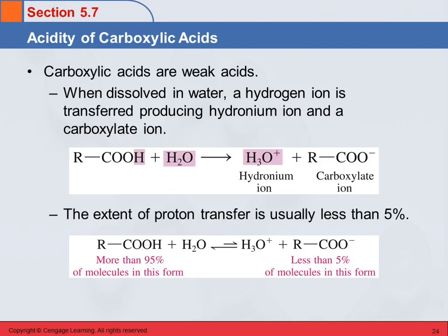A strong acid, like a strong electrolyte, dissociates completely. There were seven strong acids. Hydrochloric acid and sulfuric acid are two very common ones. When you put hydrochloric acid in water, the hydrogen and the chloride ions separate completely and you have no intact molecules. With a weak acid, you mostly have intact molecules and only a few hydrogen ions.